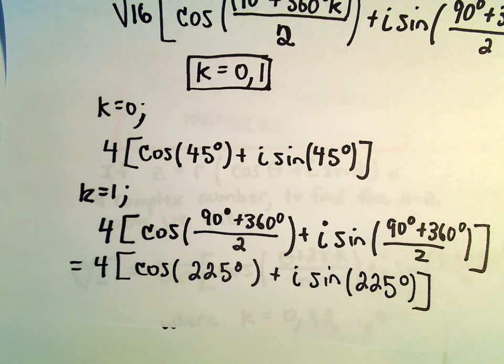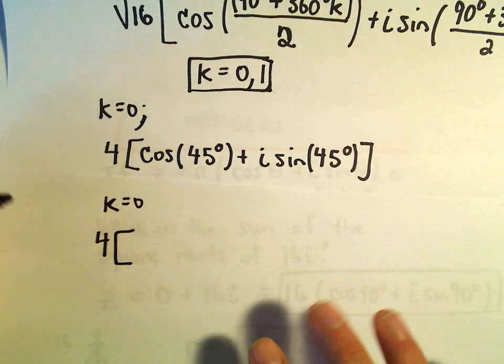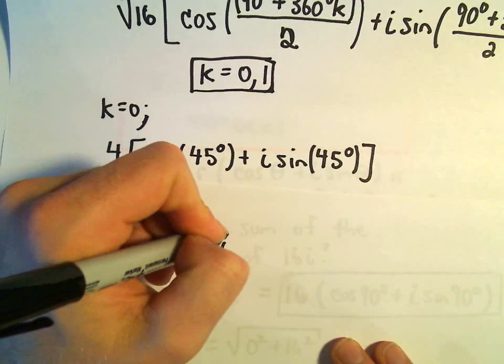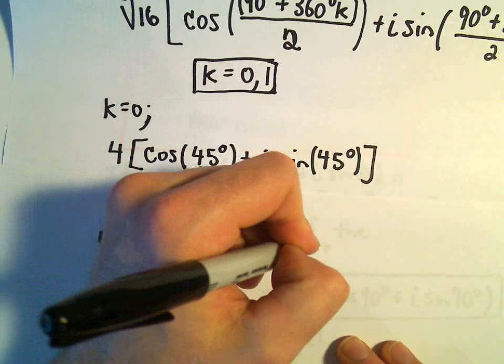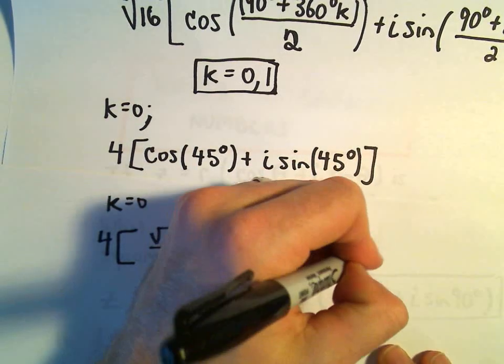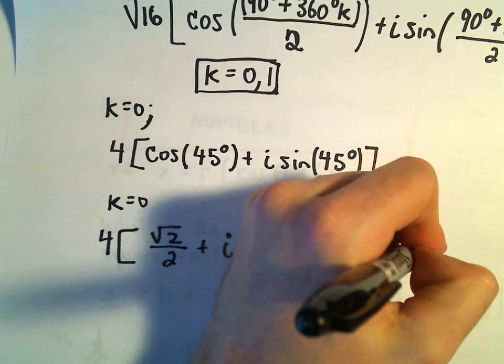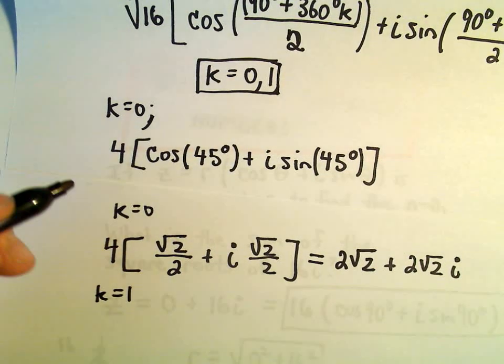Okay, so, again, we want to add these up. I'm going to just simplify them down a little bit further. So, k equals 0. Cosine of 45 degrees is going to be root 2 over 2. The same thing sine of 45 degrees will be root 2 over 2. So, when we distribute out the 4, we'll get 4 over 2, or 2 root 2, plus, same thing, looks like we'll get 2 root 2 times i. We could also simplify down when we plug in k equals 1.